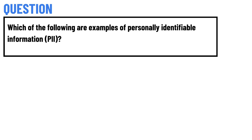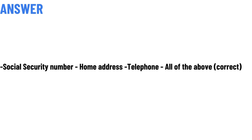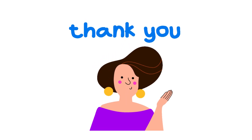Today's question is: which of the following are examples of personally identifiable information? The correct answer is: social security number, home address, telephone — all of the above. That is the correct answer to the question.